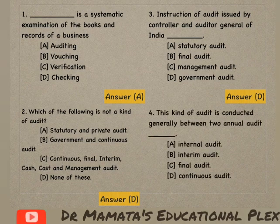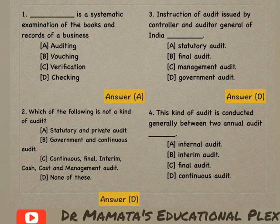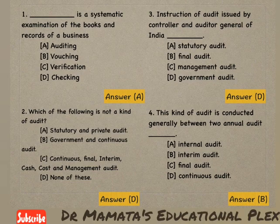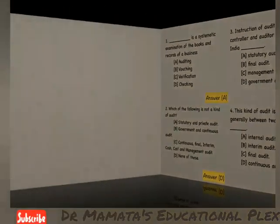Next question: This kind of audit is conducted generally between two annual audits. Jo do annual audits ke beech mein hota hai usse kya kaha jaata hai? Woh hota hai interim audit. So option B is the correct answer.